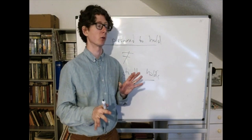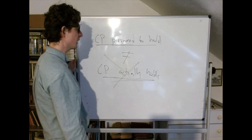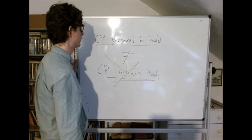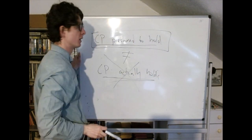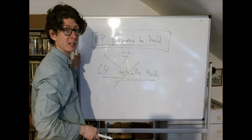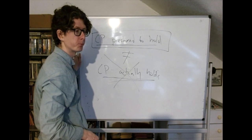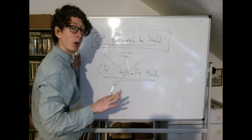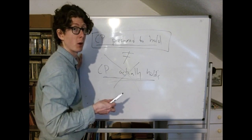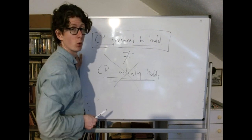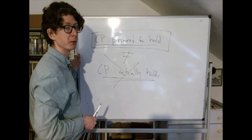So the lying example is actually not a problem for Grice's theory. Grice's theory doesn't assume the cooperative principle actually holds whenever you have an implicature — it just assumes it's presumed to hold. And in cases of lying, the audience really does presume the speaker is being cooperative; unfortunately they're wrong, but that is what they believe. So if you really want to cause a problem for Grice, you want to look at cases where the audience knows the speaker is not being cooperative and yet there still seems to be an implicature.